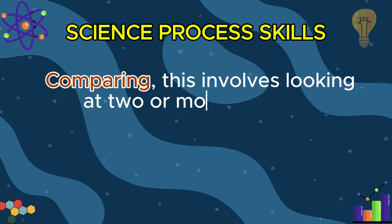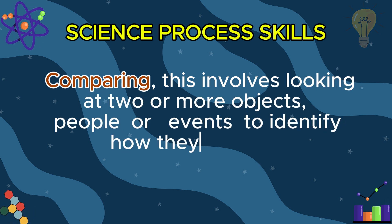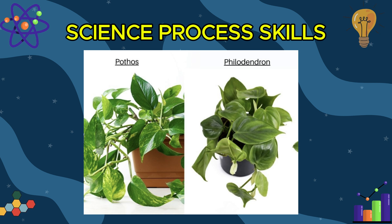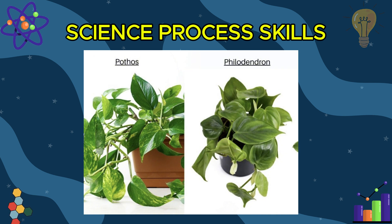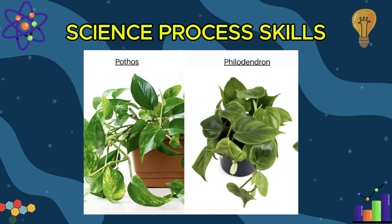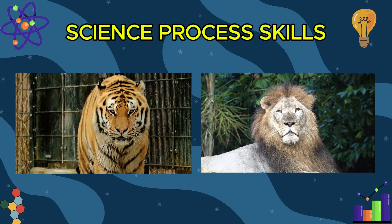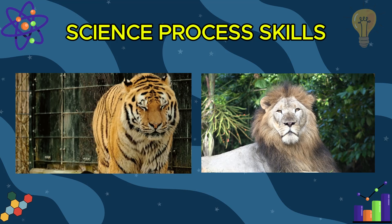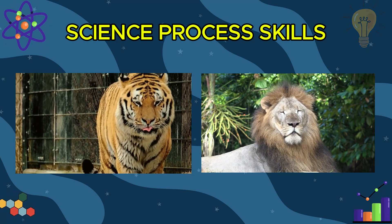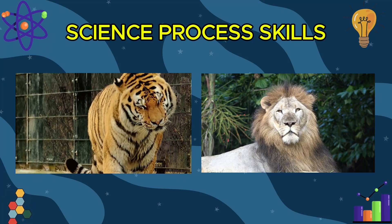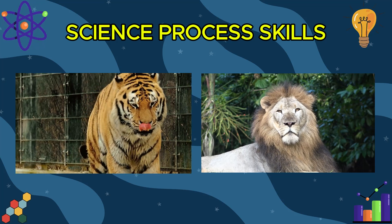Now let's talk about comparing. This involves looking at two or more objects, people, or events to identify how they are alike. For example, you might compare two different types of plants to see how they are similar in terms of size, color, or leaf shape. Another example is looking at the similarities between a lion and a tiger — both animals have fur covering their bodies, which helps keep them warm and provides camouflage. By noticing this shared feature, we can see how lions and tigers have similar adaptations that help them survive in the wild.